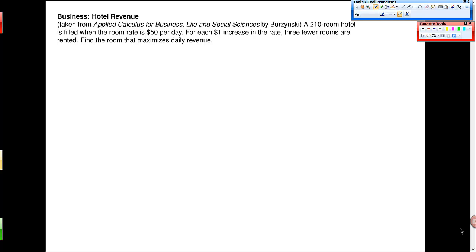Okay, so we want to look at some of these revenue problems where you need to write equations. So they kind of look like this: A 210-room hotel is filled when the room rate is $50 per day, and it's 210 rooms. And then if I increase this price by $1, then the number of rooms goes down.